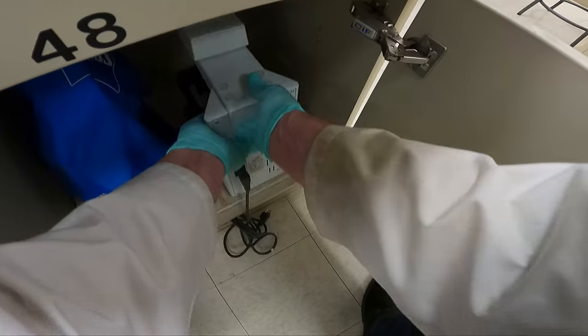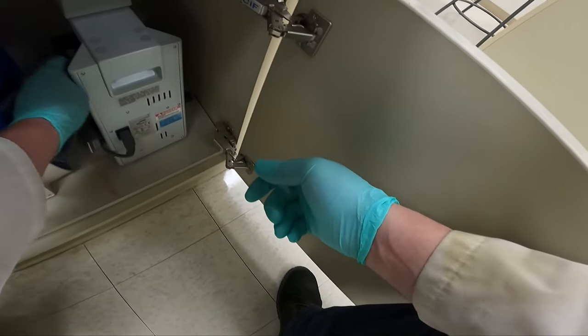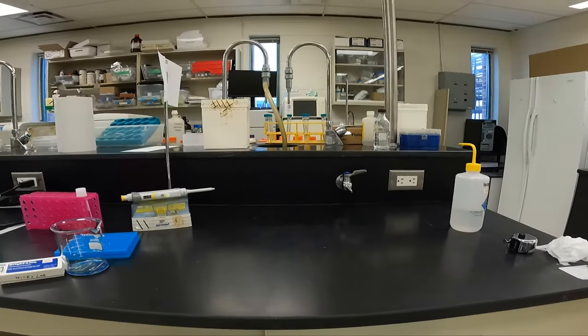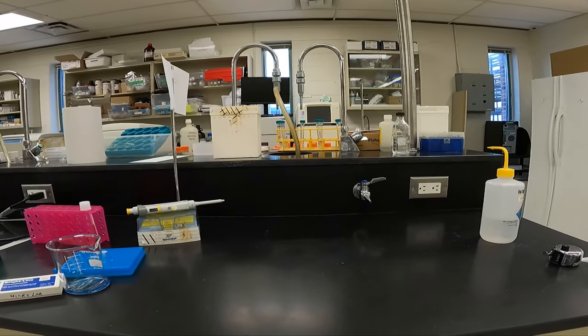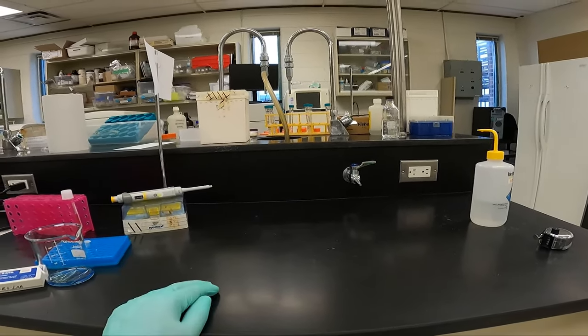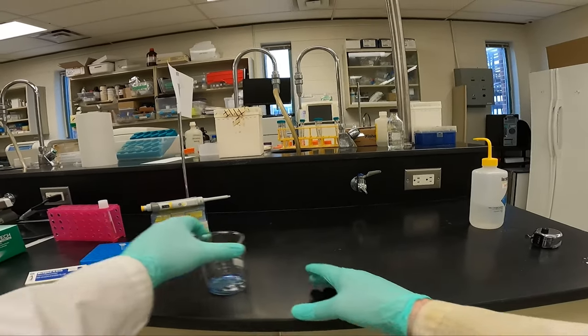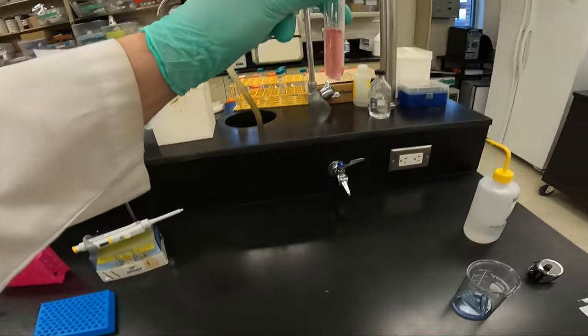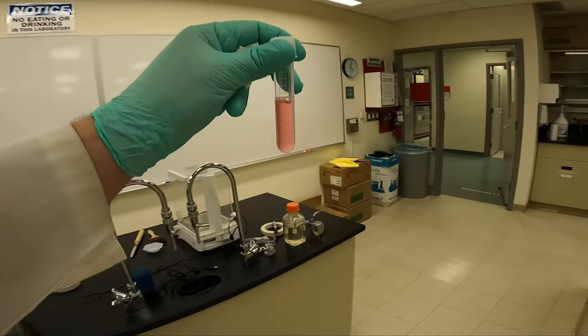So in today's lab, we looked at how to count cells using a hemocytometer and a compound microscope. We did the calculations to determine the concentration and the percent viability. We have our leftover cells. Please remember to bleach them when you're done. That's all for today.